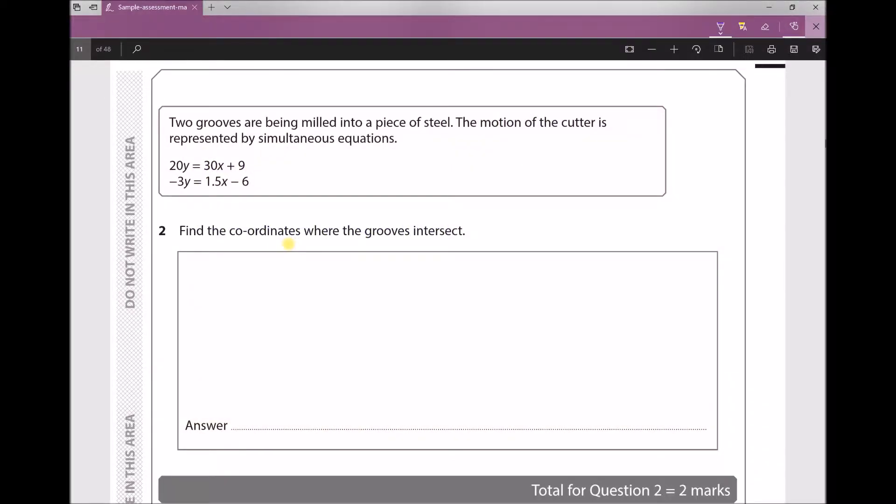Question 2 states the following: Two grooves are being milled into a piece of steel. The motion of the cutter is represented by simultaneous equations: 20y = 30x + 9 and -3y = 1.5x - 6. The question states: find the coordinates where the grooves intersect.